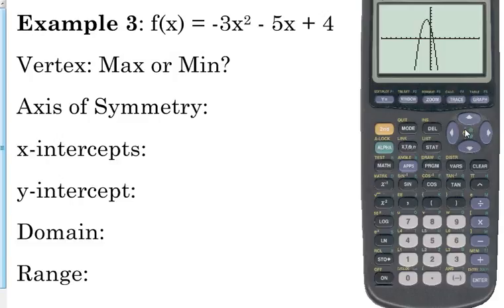All right, so here's our graph. Is that a maximum or a minimum? It's a maximum. Have you noticed something about the ones that have a maximum? Something about their equation? The leading coefficient is negative. When the leading coefficient is negative, you're going to have a maximum. When the leading coefficient is positive, you're going to have a minimum. So we have a maximum.